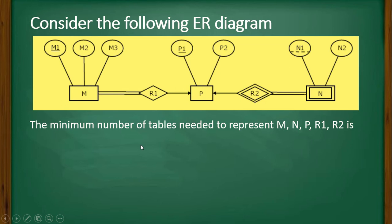The minimum number of tables needed to represent M, N, P, R1 and R2 is A: 2, B: 3, C: 4, and D: 5.